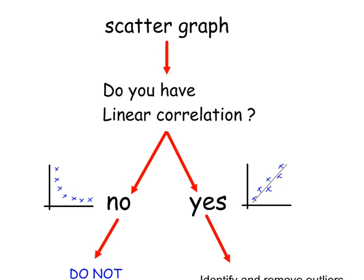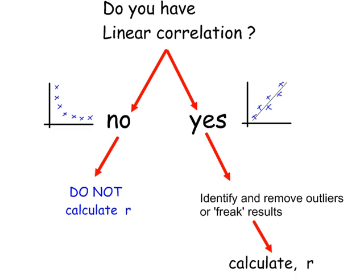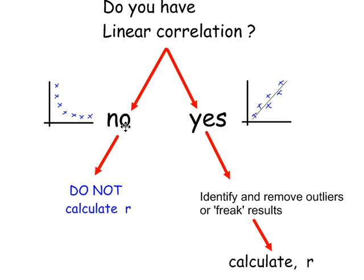Starting with a scatter graph, have a look to see if there is linear correlation. And at this point, if you think no, there's no linear correlation, so perhaps a curve would be a better fit for the data, do not calculate the value of R, the PMCC. If you see that a linear relationship does exist in the data, then identify and remove any outliers or freak results, and then calculate the value of R, either using the formula or your calculator.